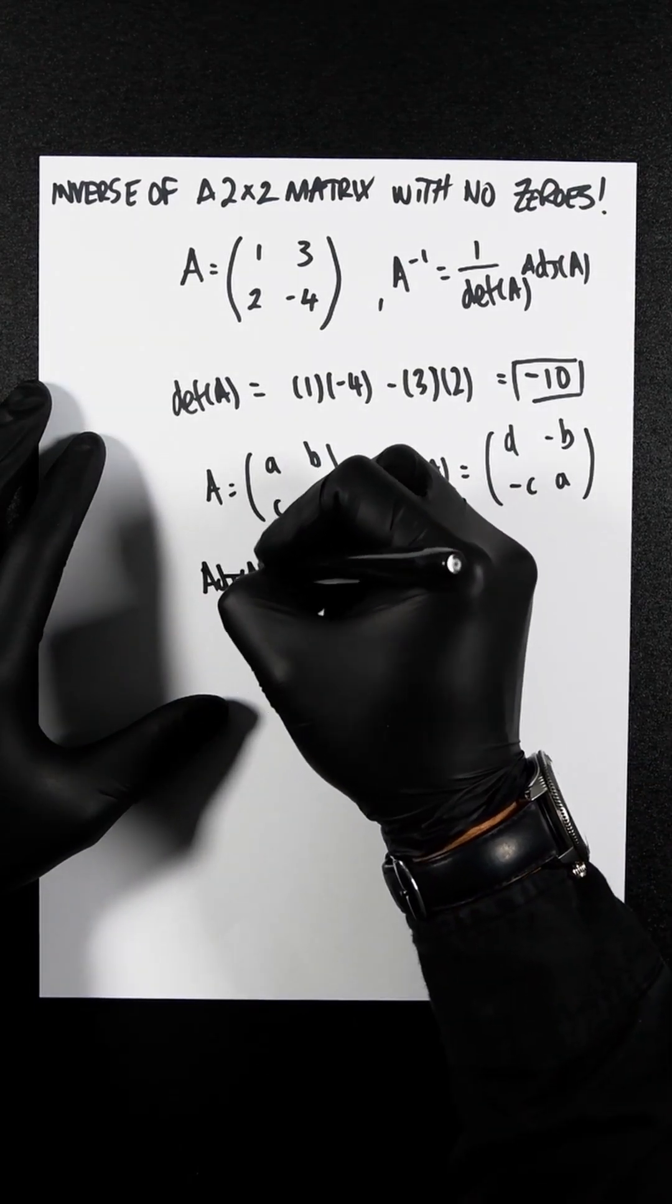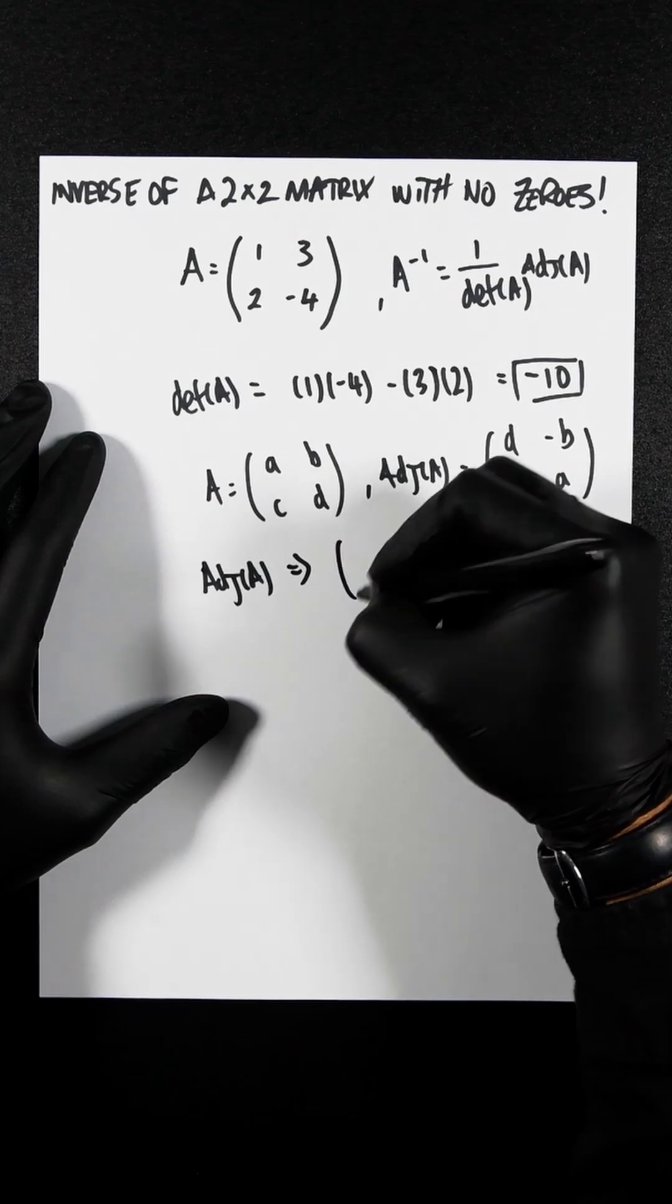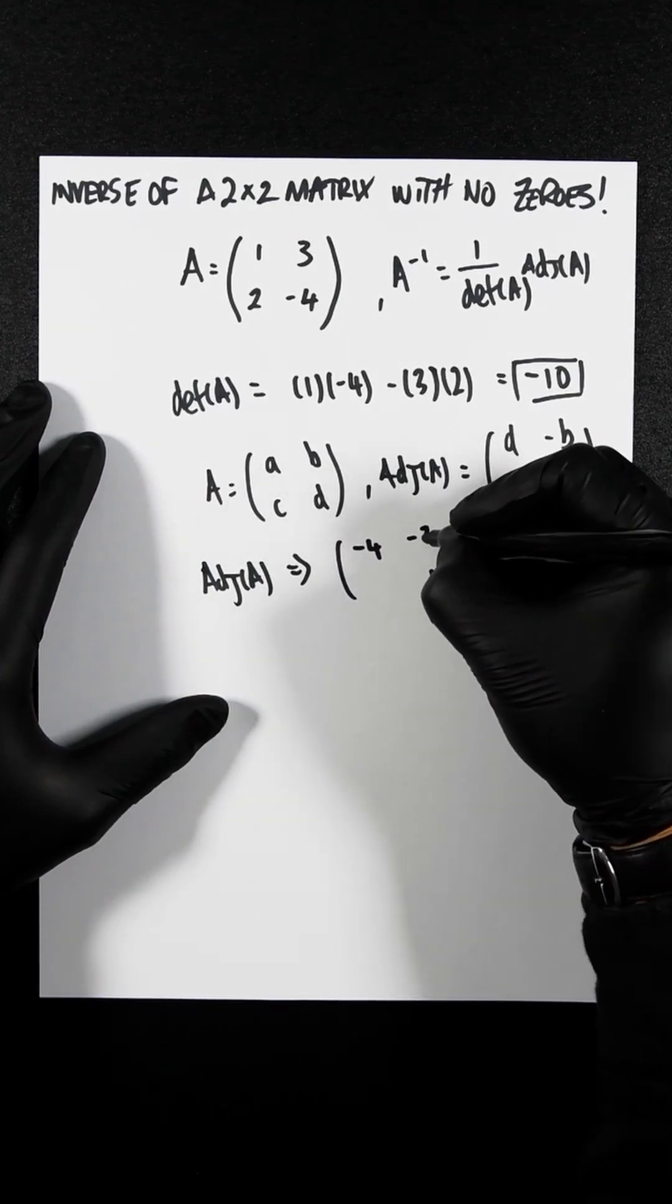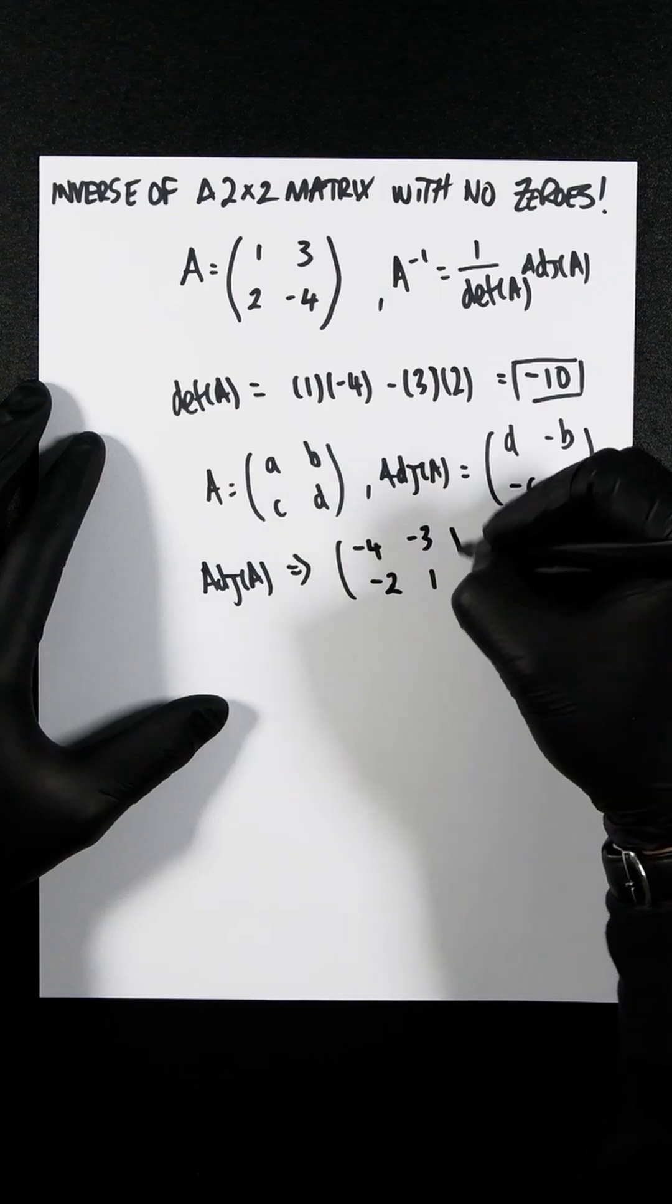So adjugate of A would become minus 4 and 1. So we swap those, and then let's flip the signs here.